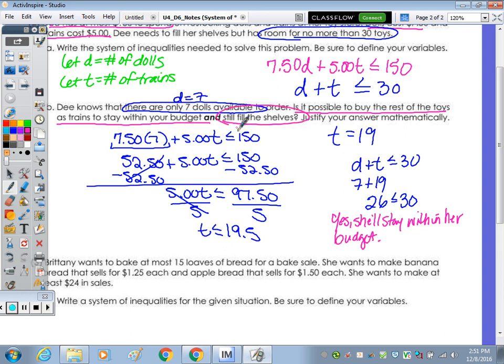So yes, she'll stay within her budget and still fill the shelves. Will she fill the shelves? No. Full would be how many? 30. So did she fill it? No. Yes, she'll stay within her budget. However, she will not fill the shelves.